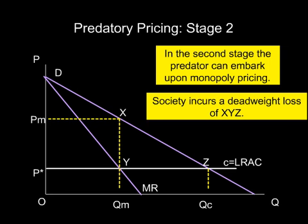If the victim cannot cover its variable costs, then it will exit the market. This means that the predator can raise its prices to monopoly levels. In the diagram, the predator maximizes profit where its marginal revenue, MR, equals marginal cost, MC, and produces an output of OQM. Note that this is considerably lower than the output of OQC, which we had before predatory pricing took place.